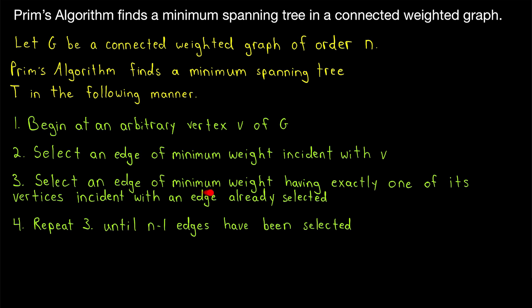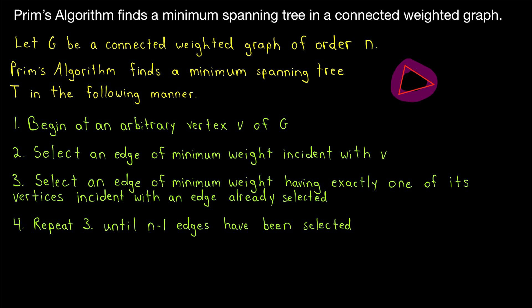Step three: we select an edge of minimum weight that has exactly one of its vertices incident with an edge that we have already selected. This means the edge has to share a vertex with an edge already in our spanning tree — this keeps the tree connected. But it can't share two vertices with edges already selected; it must share exactly one. This ensures that with each step we include a new vertex, and it also ensures we don't create any cycles. So Prim's algorithm will give us an edge that shares one vertex with an already selected edge, but not an edge that shares two end vertices with edges already selected, as that would create a cycle.